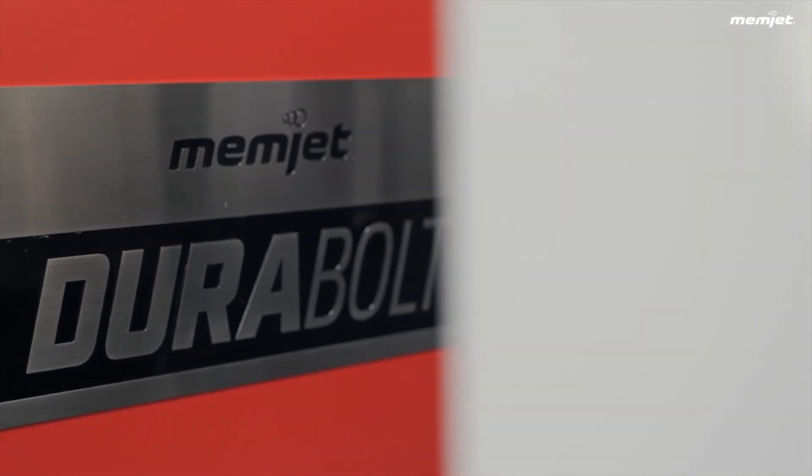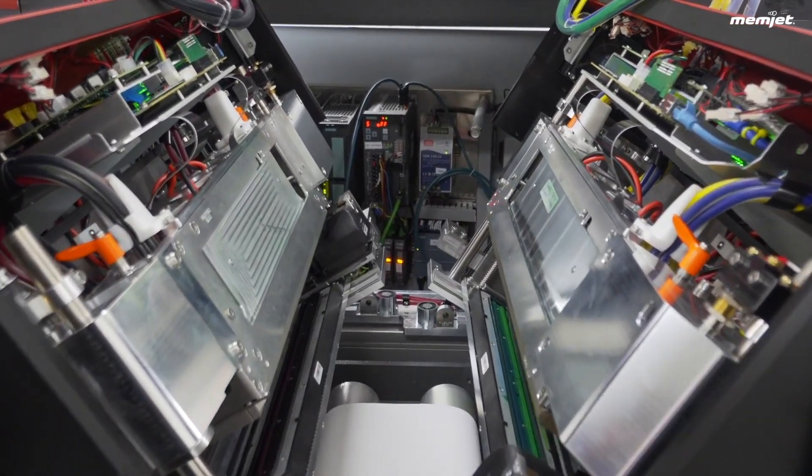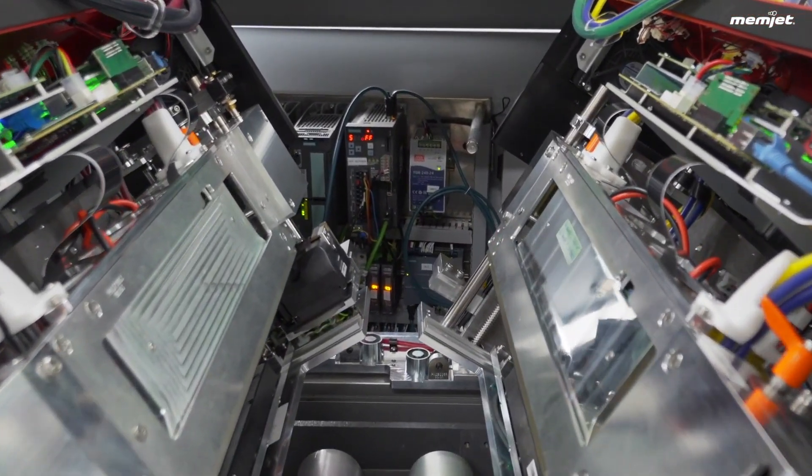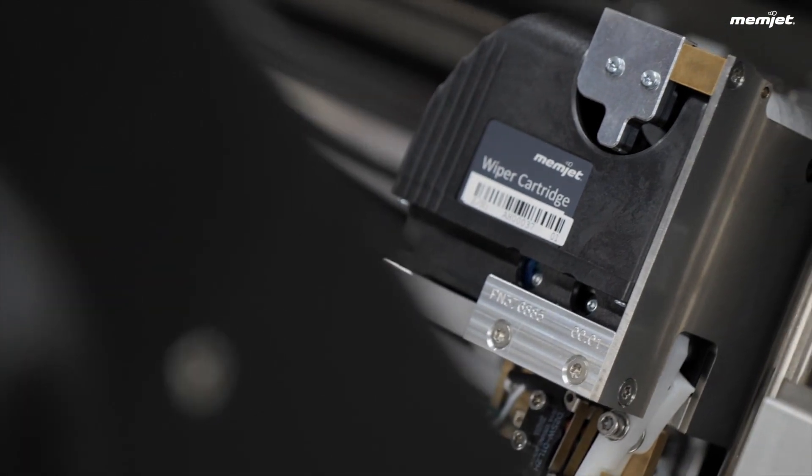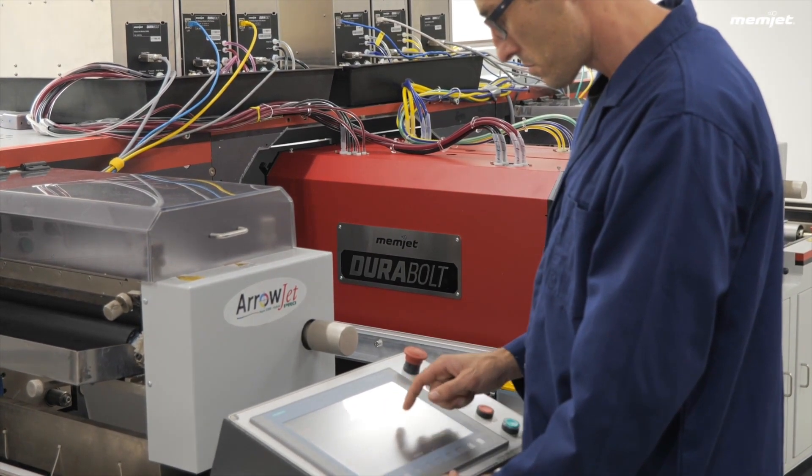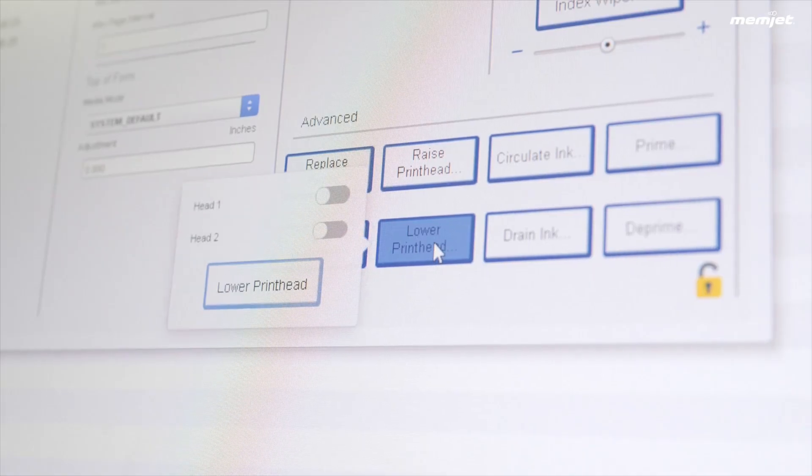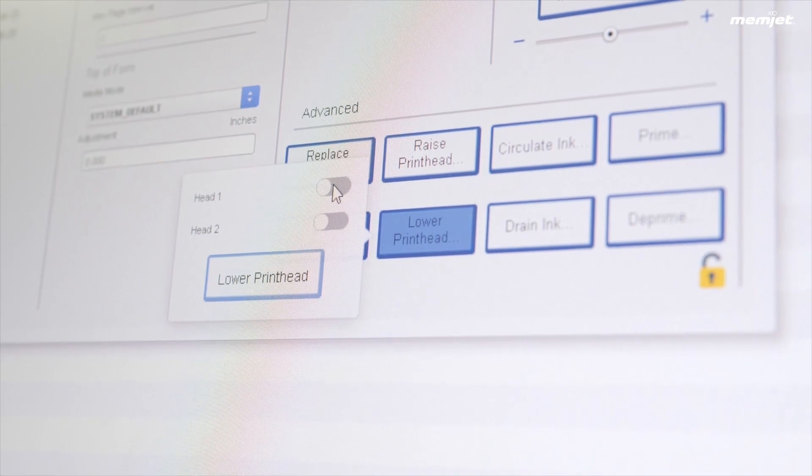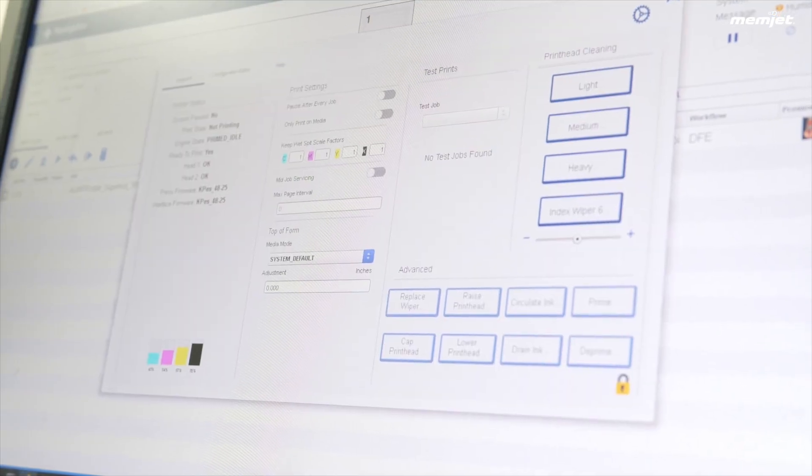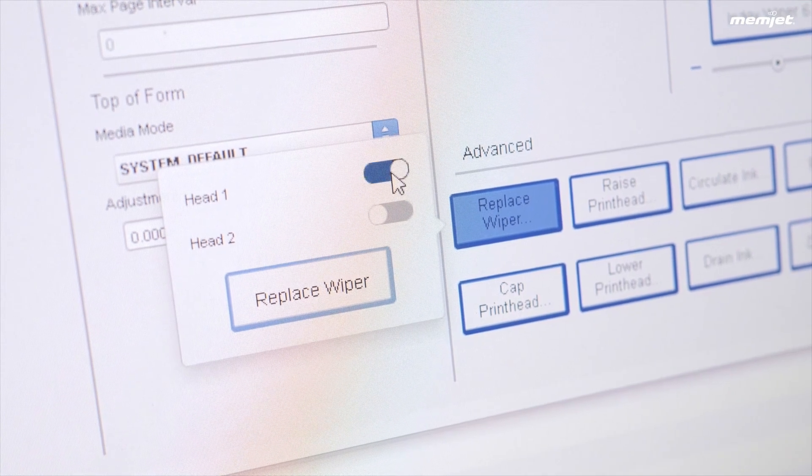The Duribolt solution includes a custom-built digital front-end, or DFE, that streamlines interaction between the print engine and all aspects of the printing process. This delivers powerful process control, system automation and straightforward user operation. From colour management to media library selection, automated print height adjustment and press media path and component interaction, the DFE makes the print process fast and simple.